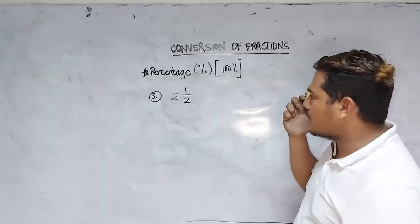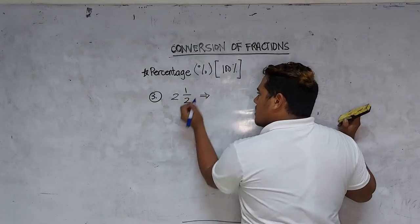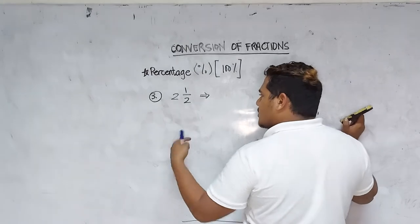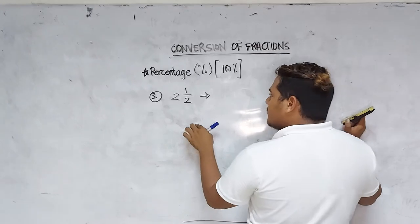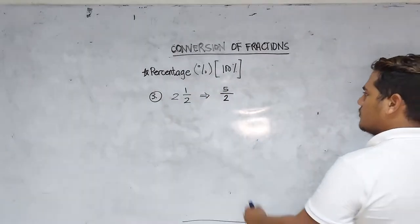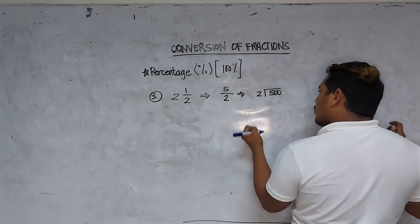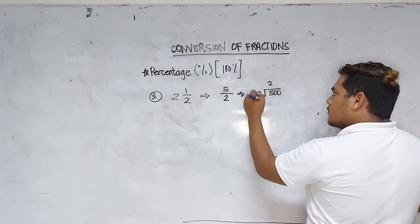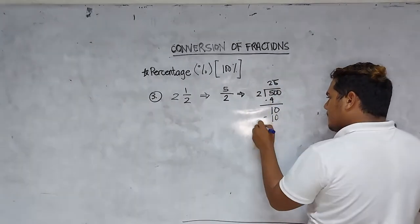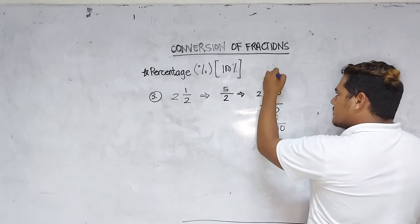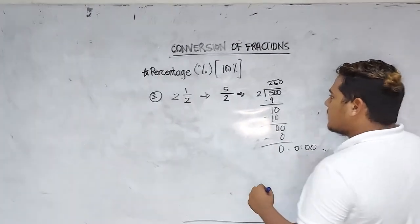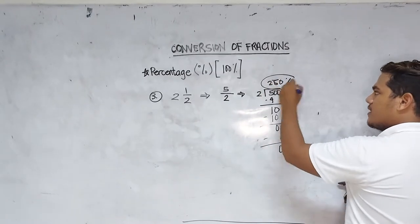But how do we prove it is 250%? In proving this, I will convert it into its improper fraction form. So 2 and one-half becomes: 2 times 2 plus 1, which gives 5 over 2. Then we multiply the numerator by 100: that is 500 divided by 2. 5 divided by 2 is 2; 2 times 2 is 4; remainder 1. Bring down 0: 10 divided by 2 is 5; 5 times 2 is 10; remainder 0. And so on — remainder is 0. Therefore, the percentage form of 2 and one-half is 250%.